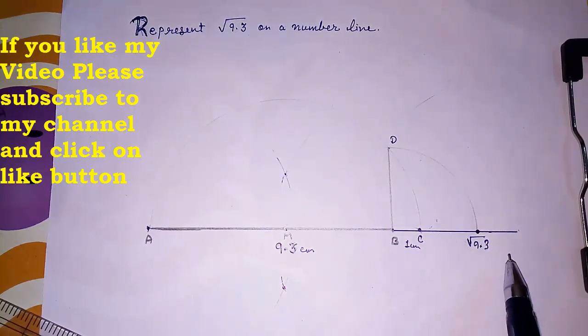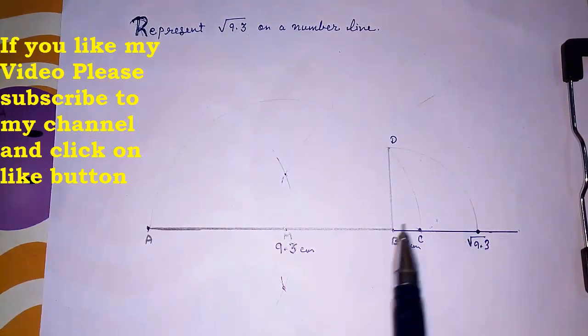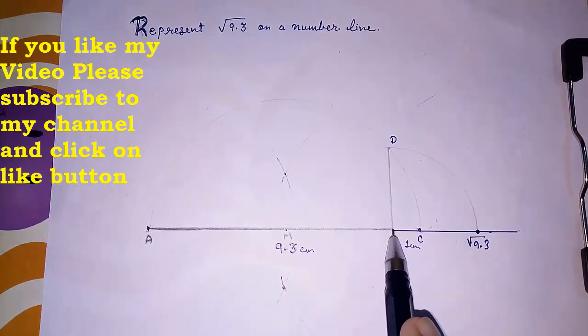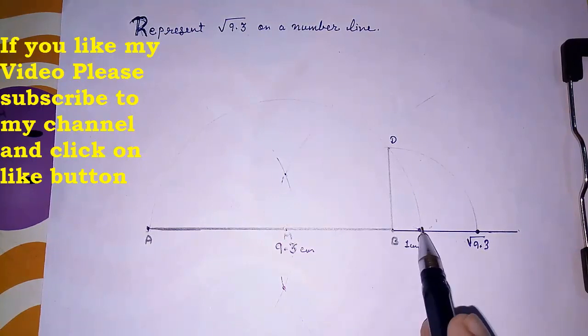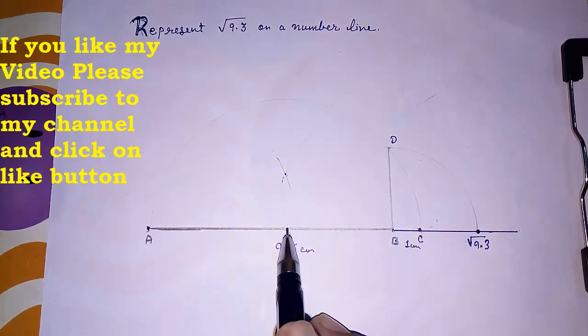So this way we can find. Again I am explaining this whole method. Step 1: draw a line segment AB measuring 9.3 cm. Step 2: BC, extend it 1 cm. Then third step: finding the midpoint of A and C.